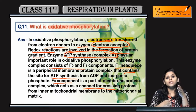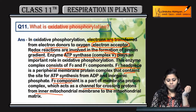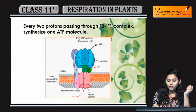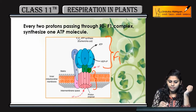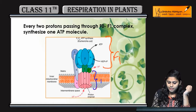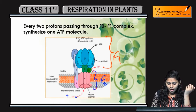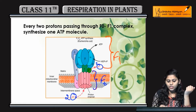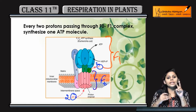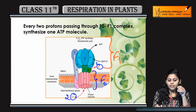The F0 component allows protons to cross from the inner mitochondrial membrane to the mitochondrial matrix. You can see this is the F1 piece, and this is F0. In F0, hydrogen or proton gradients cross, and for every two proton gradient crossings, one ATP molecule is formed.